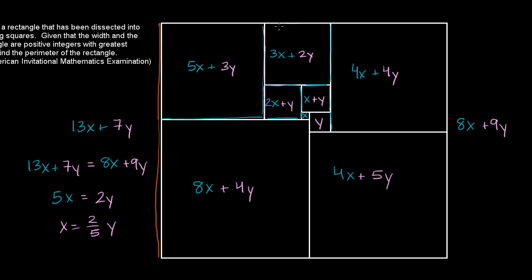So if we add 5x plus 3y plus 3x plus 2y plus 4x plus 4y, this top dimension, you get 12x plus 9y. And if you go down here, you have 12x plus 9y. So these actually ended up to be the same in terms of x and y, so they're not giving us any more information, no more constraints.